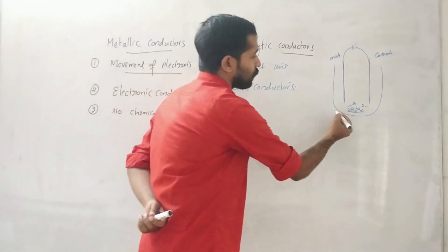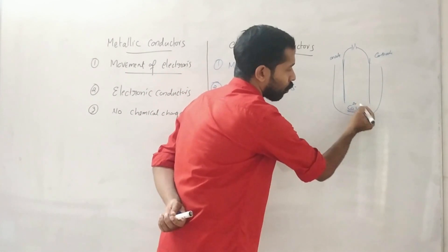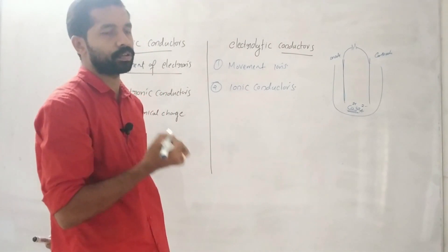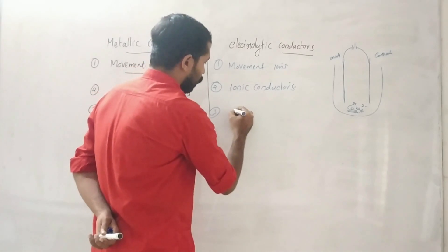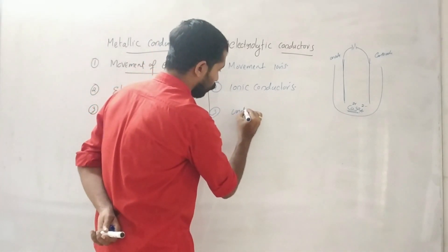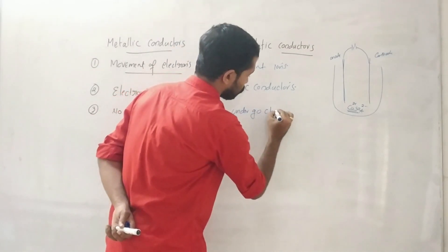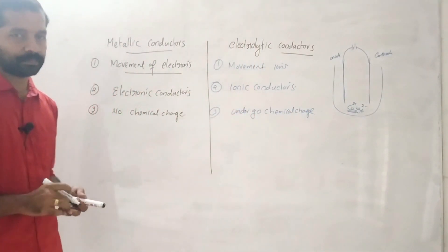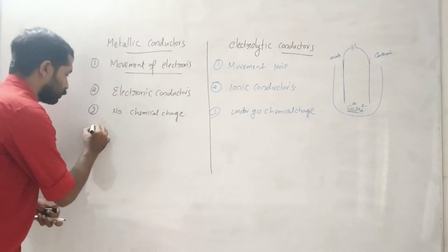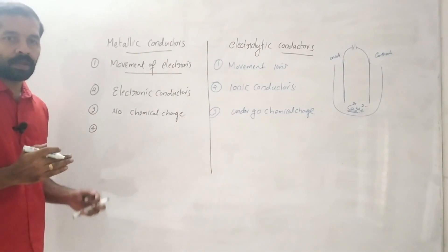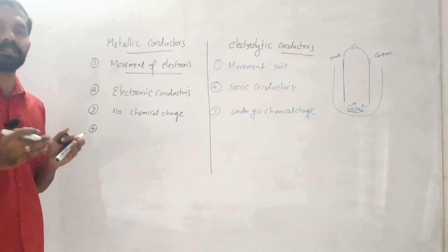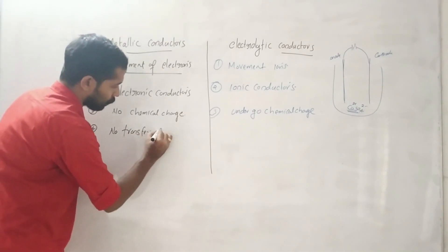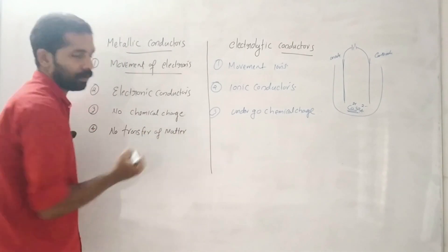In electrolytic conductors, electricity passes through the electrolyte — for example, copper sulfate — which decomposes into ions such as Cu²⁺. They undergo chemical change in the form of decomposition of the electrolyte. There is also transfer of matter that takes place.